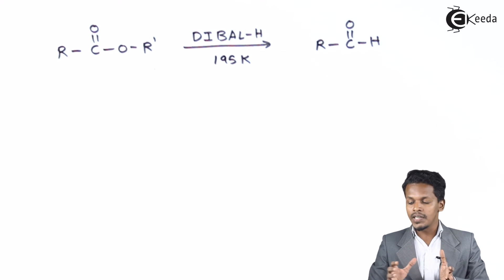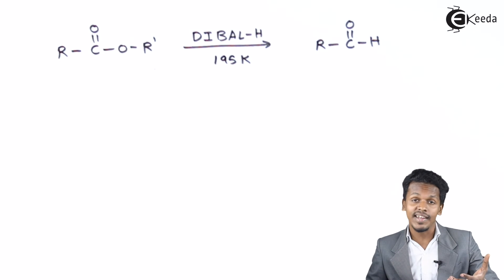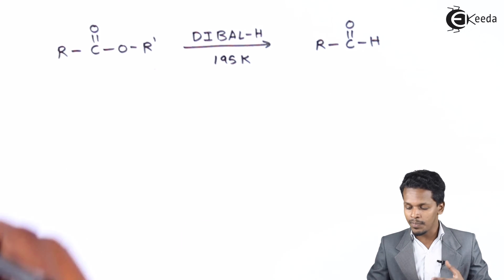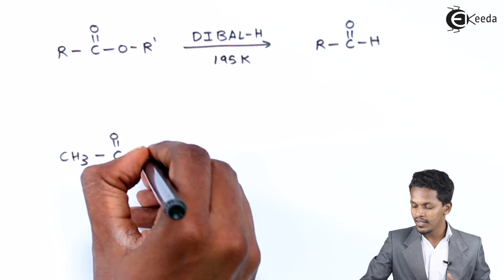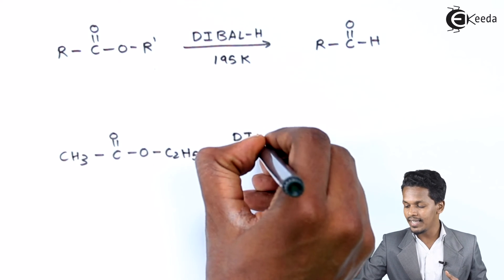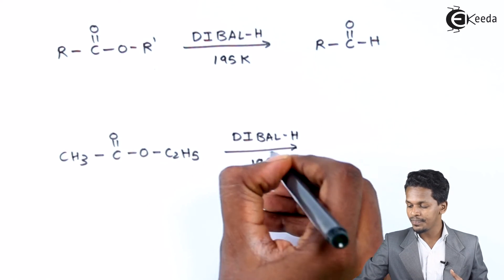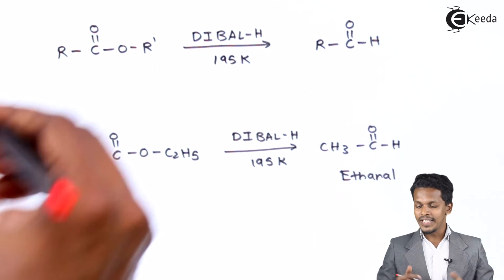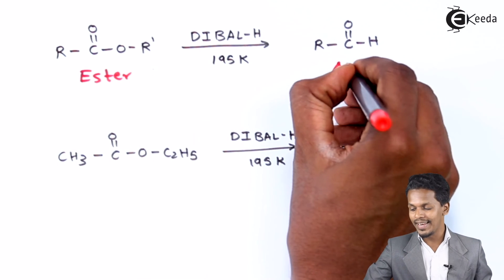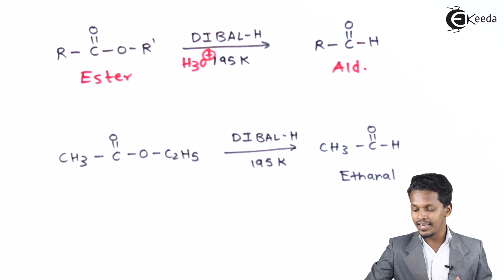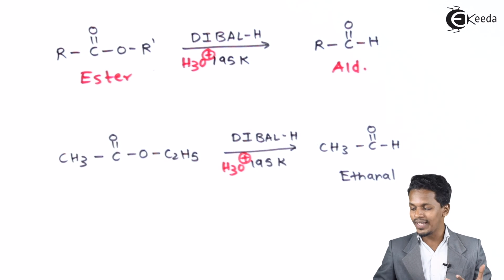If we increase the temperature, or if this reaction proceeds at room temperature, there is a chance that the aldehyde would be further reduced to an alcohol. To avoid that, we maintain the temperature at 195 Kelvin. For example, CH3-C(=O)-OC2H5 (ethyl acetate) reacts with DIBAL-H at 195 Kelvin. The product formed is CH3-C(=O)-H, which is acetaldehyde. This is how we can convert an ester into an aldehyde using DIBAL-H, with acid hydrolysis completing the reaction.